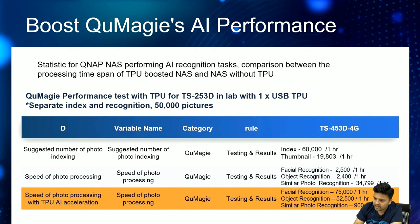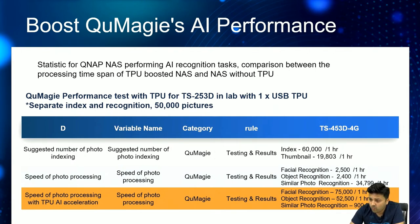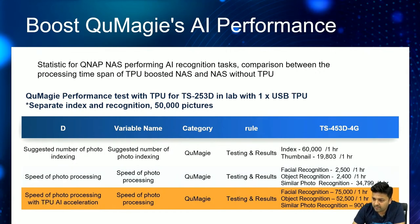For similar photo recognition, it's around 35,000 per hour without TPU, but with the TPU it reaches approximately 900,000 similar photo recognitions per hour. So with just one TPU, the performance is massively boosted — it enhances your speed and saves your CPU resources. That's the whole purpose of combining TPU with our QNAP NAS. These are official test results from the QNAP test lab.